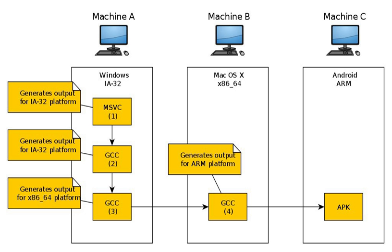A cross-compiler is a compiler capable of creating executable code for a platform other than the one on which the compiler is running. For example, a compiler that runs on a Windows 7 PC but generates code that runs on an Android smartphone is a cross-compiler.